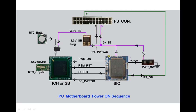From the 9th pin of the power supply connector, which is the violet wire, 5 volts standby voltage goes into the motherboard. This voltage is called standby voltage because it is always present before or after pressing the power button. This 5V standby goes to the SiO chip and also to the power switch on the front panel connector. Pin 6 and pin 8 are the power switch pins; pin 8 is grounded and pin 6 receives this 5V standby — on some boards 3.3V standby is used.